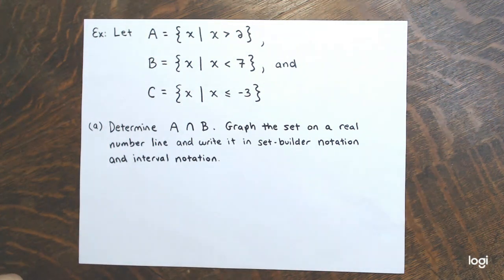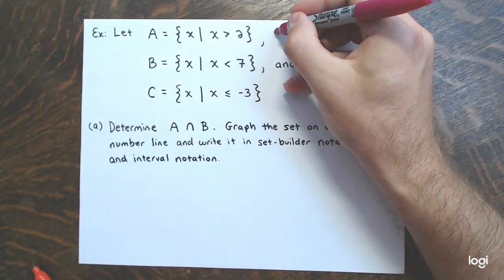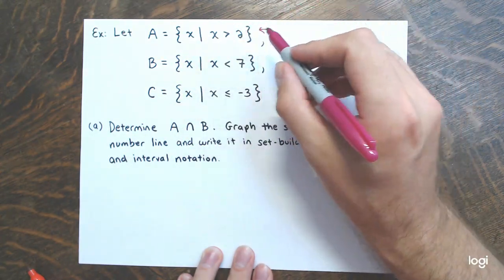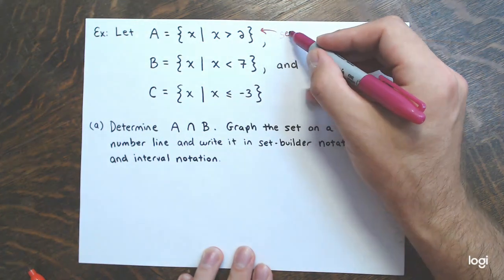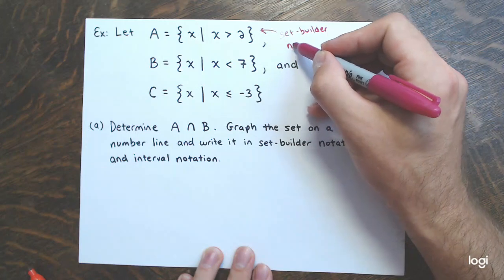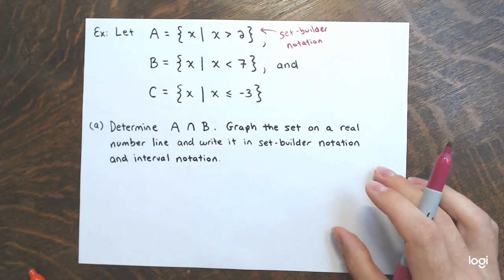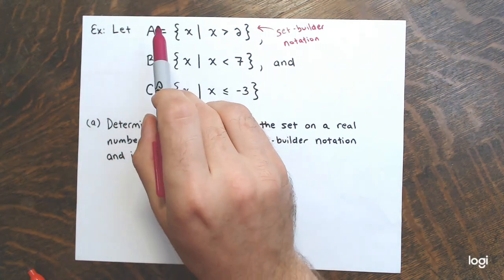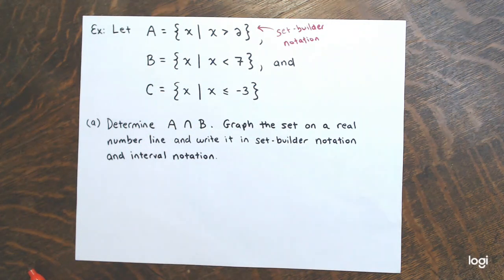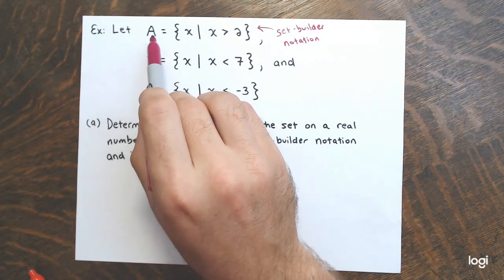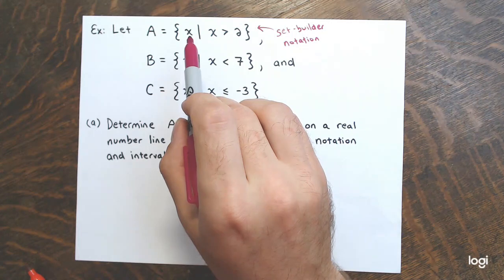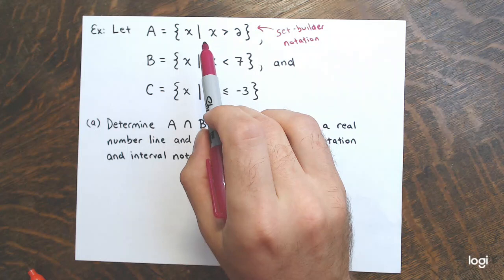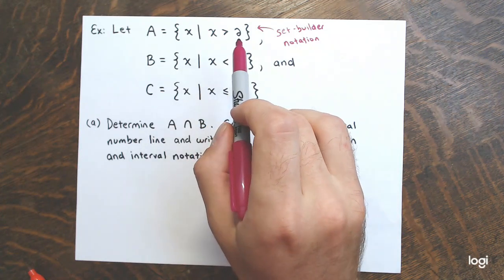Here are three sets written in set builder notation — the curly braces with a vertical bar and a condition. This notation describes sets with infinitely many real numbers. Set A is {x | x > 2}, meaning all real numbers x such that x is greater than 2. So 3, 4, 5, 2.001, pi, and e all belong to A. Anything greater than 2 is in A.